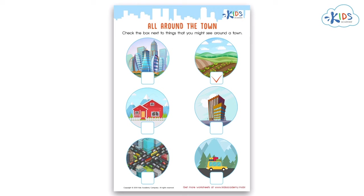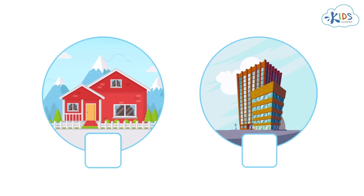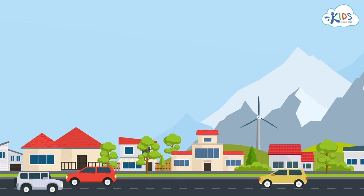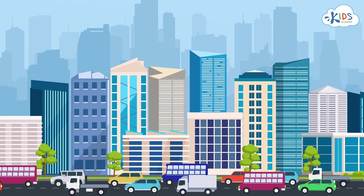Let's look at the next set of pictures. Here we have a cottage and apartment buildings. Do you think that people in small towns live in cottages or apartment buildings? That's right — they live in cottages or other types of homes. Apartment buildings are usually found in busy areas where lots of people live.